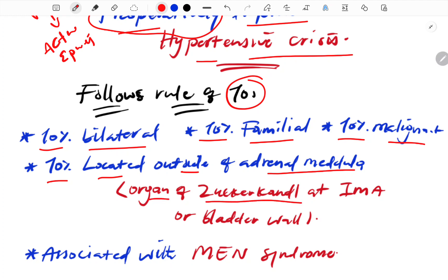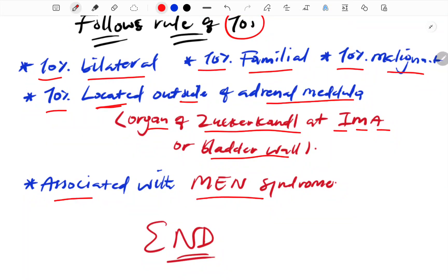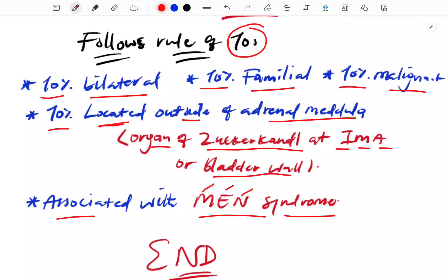Extra-adrenal locations include the organ of Zuckerkandl near the inferior mesenteric artery and bladder wall. Pheochromocytoma is associated with multiple endocrine neoplasia syndromes: MEN 2A, MEN 2B, and Von Hippel-Lindau syndrome.